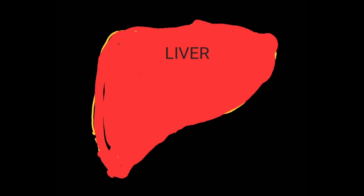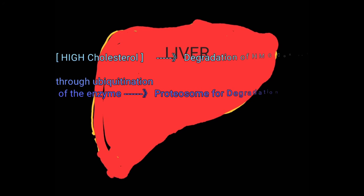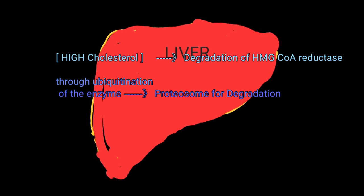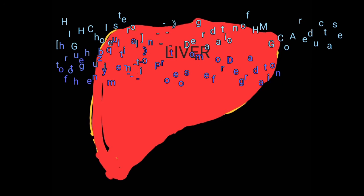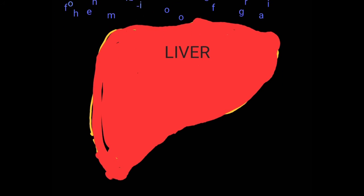High intracellular cholesterol can also regulate the degradation of HMG CoA reductase in hepatocytes. High intracellular cholesterol concentrations will promote the ubiquitination of HMG CoA reductase, which is an important signal to send HMG CoA reductase to the proteasome where it will be degraded, removing it from the cytoplasm of hepatocytes and resulting in decreased cholesterol biosynthesis.